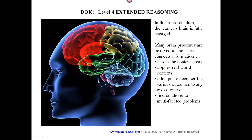At level four, you have extended reasoning. This dynamic visual representation shows us a brain that is fully engaged. The learner is involved in connecting information across content areas, applying real-world context, attempting to decipher the various outcomes to any given topic, or to find solutions in multifaceted problems. Beautiful picture, isn't it?